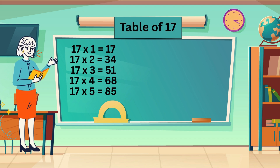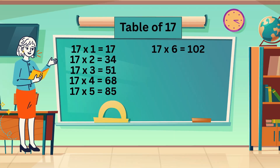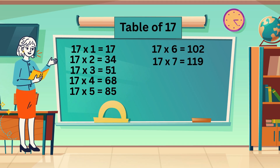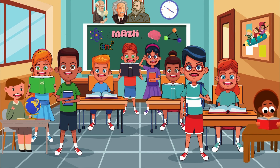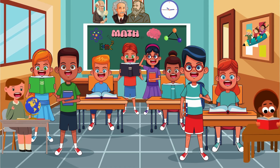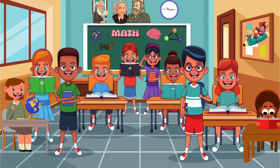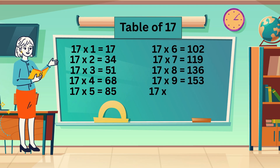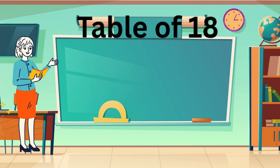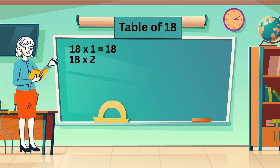17 fives are 85. 17 sixes are 102. 17 sevens are 119. 17 eights are 136. 17 nines are 153. 17 tens are 170.